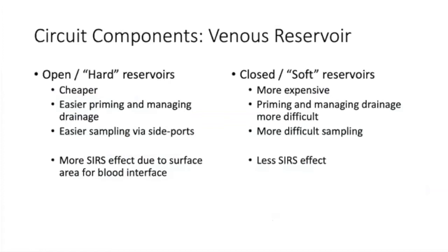Venous drainage flows to a venous reservoir. There are open and closed — or hard and soft — reservoirs. Hard reservoirs are easier for priming and bedside management but have more of a SIRS effect, as all SIRS effects related to cardiopulmonary bypass involve blood contacting non-endothelialized surface area. There is more surface area effect with an open reservoir. Soft reservoirs are more difficult to manage from a perfusionist standpoint but offer less of a SIRS effect and likely some patient benefit.